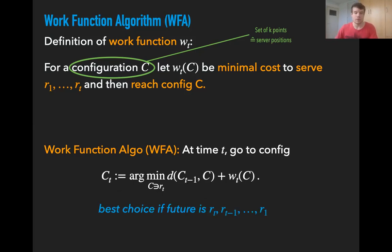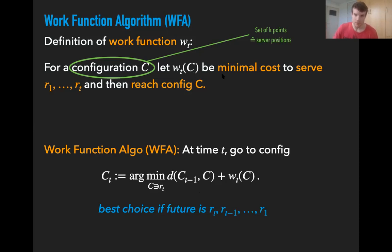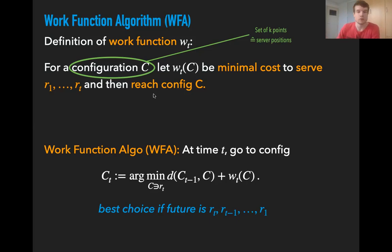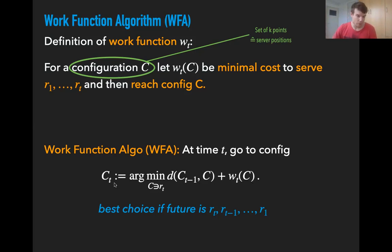The work function algorithm is defined as follows. At any time t, when we receive request r_t, we go to the configuration c_t which minimizes the sum of the distance from the previous configuration plus the work function value of this new configuration. Notice that if in this argmin we had only the distance from the previous configuration and not the second term, this would just be the greedy algorithm, which has infinite competitive ratio. And if instead we only had the work function, this would be the algorithm that always chases the configuration of the current optimal — also infinite competitive ratio. But interestingly, combining these two leads to an algorithm that is known to be competitive and conjectured to be the best algorithm for this problem.